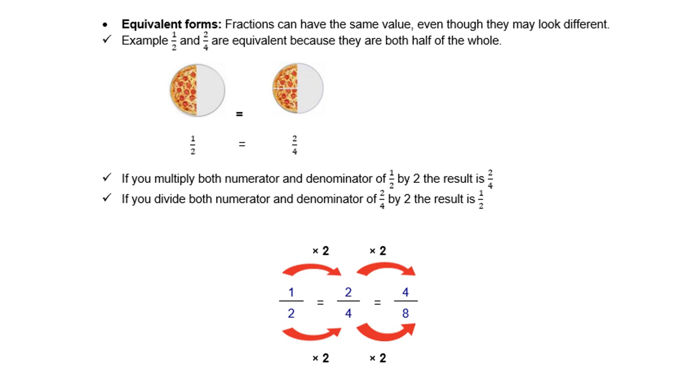If you multiply both numerator and denominator of a half by two, the result is two quarters. If you divide both numerator and denominator of two quarters by two, the result is a half. It doesn't matter whether you multiply by two or divide by two. A half is the same as two quarters, is the same as four eighths.